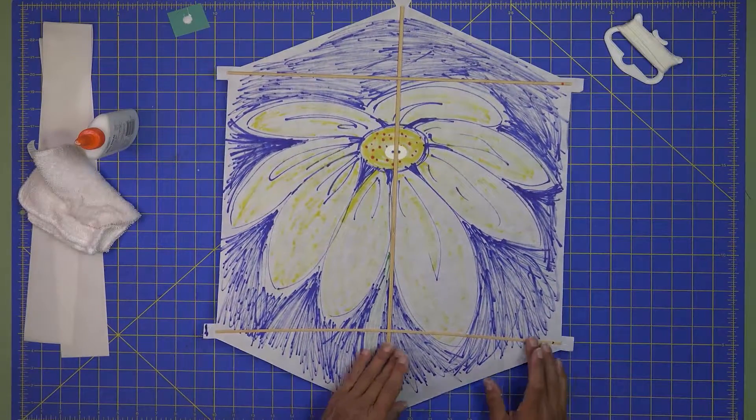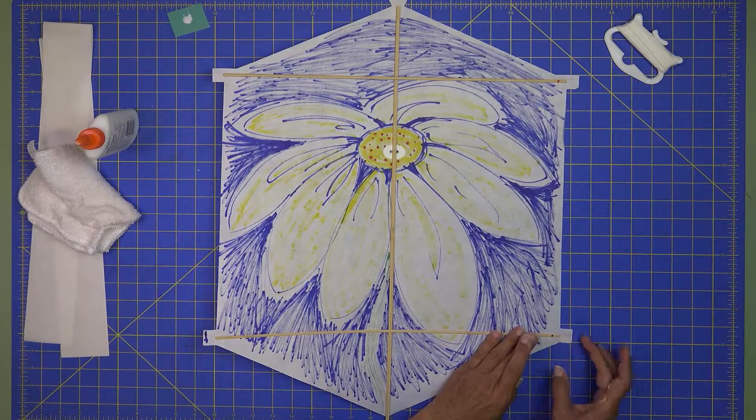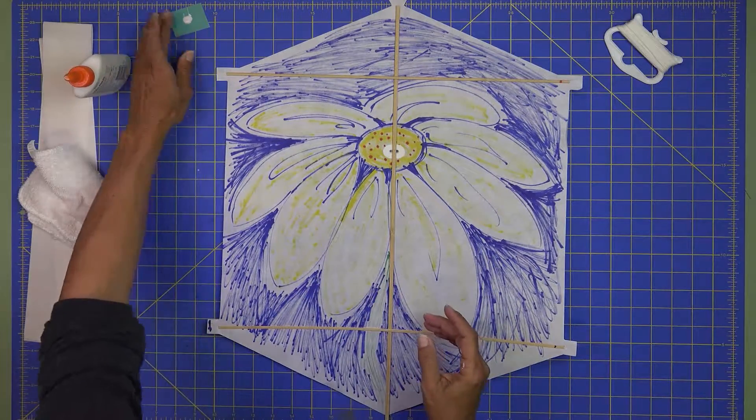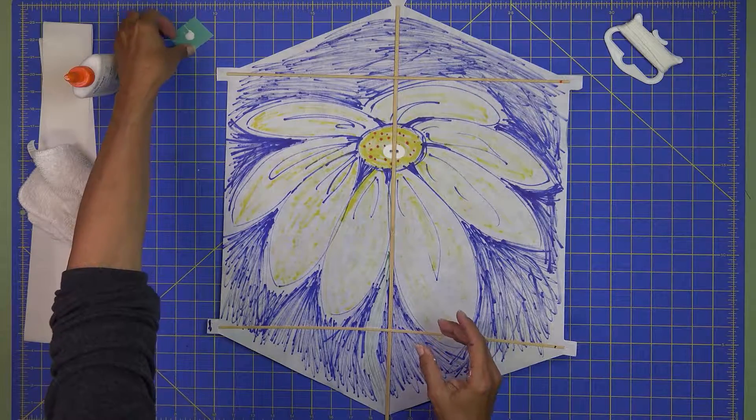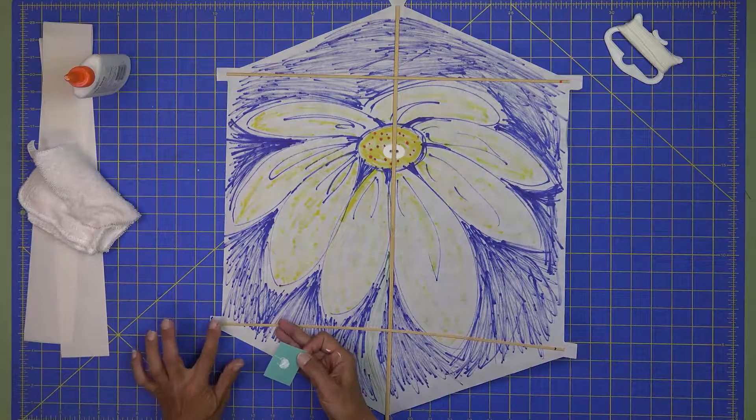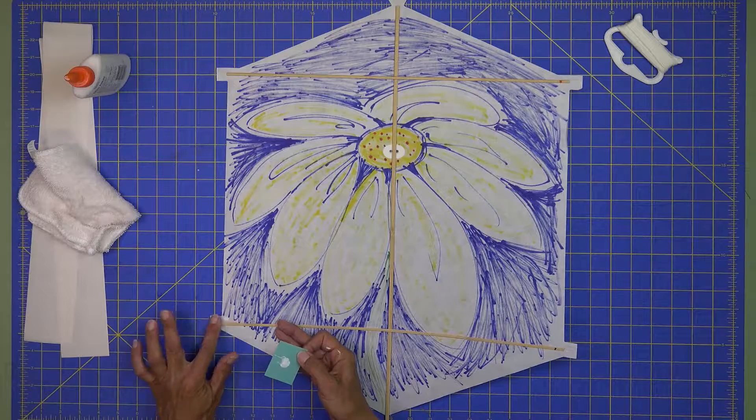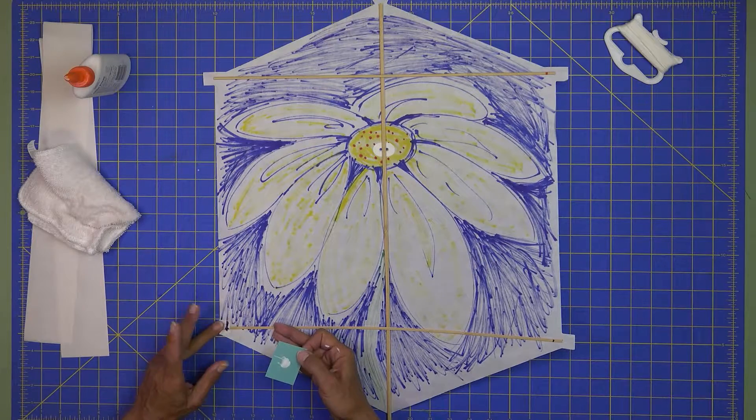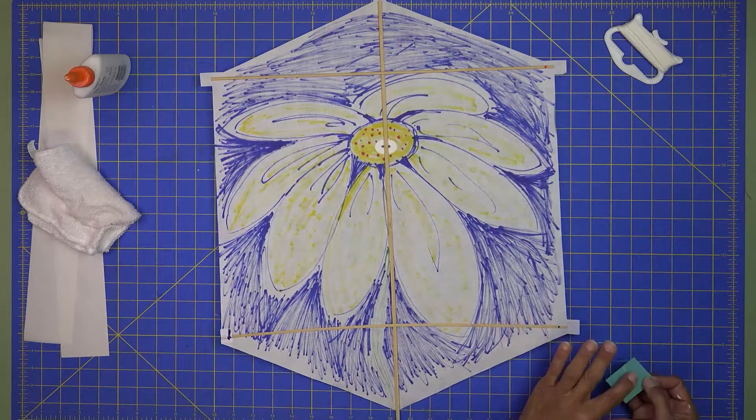And now what we want to do is we want to fold these tabs over and glue them down just as a bit of reinforcement. So this is when I'm just going to use this little bit of glue I've got here. I'm just going to dab it on to the end of the tab and then fold it over and press it down. Do the same thing here.